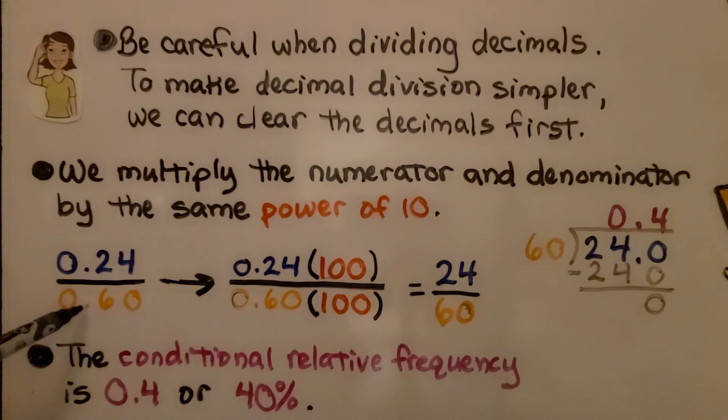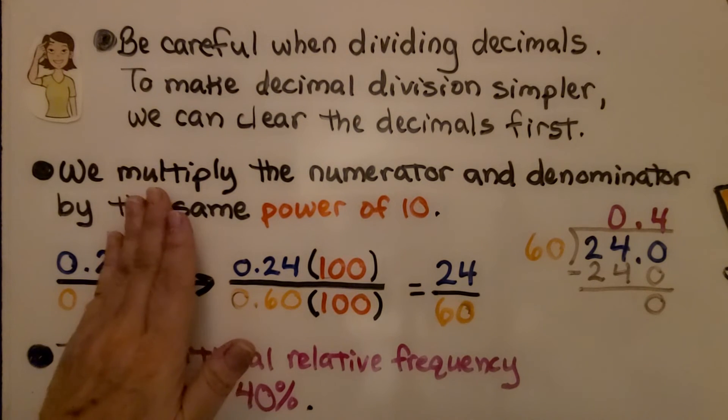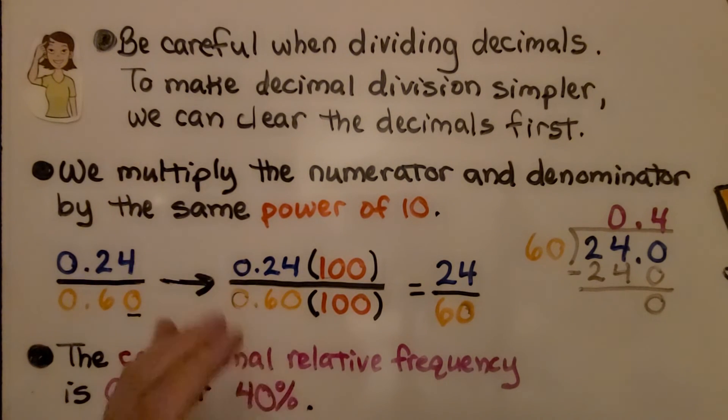And, we would do the same thing for the 60 hundredths. This is in the hundredths place, so we're going to multiply it by 100. If it was just the tenths place, we would do tenths. If it's the thousandths place, then it would be by thousand.